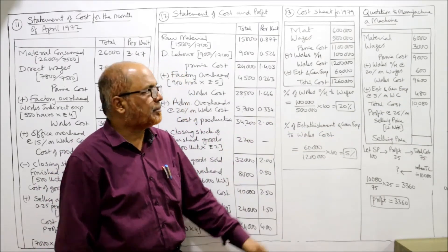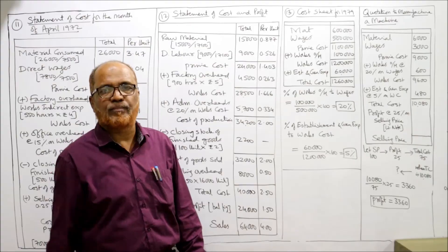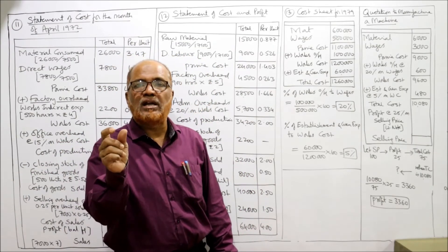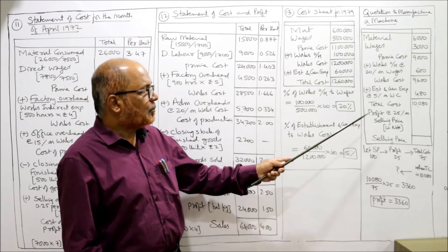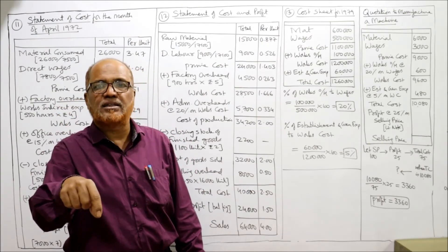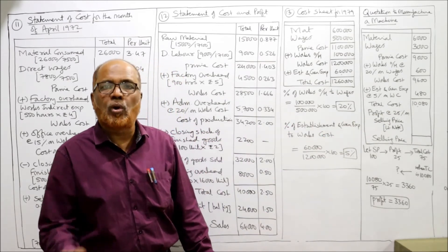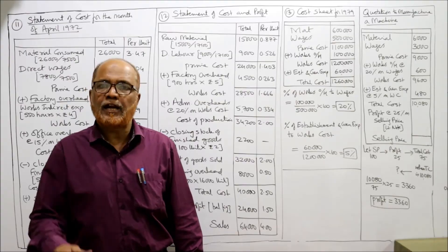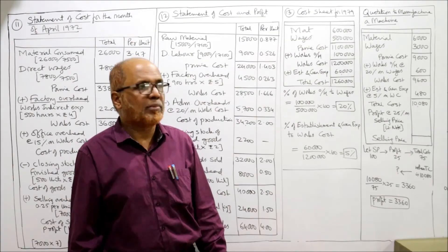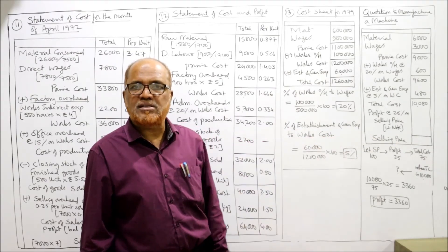Establishment and general expenses = 5% on works cost = 9,600 × 5% = 480. Total cost = 10,080. The problem requires a profit of 25% on selling price — not on cost. This creates a complication because we don't yet know the selling price; the selling price only becomes known after adding profit.